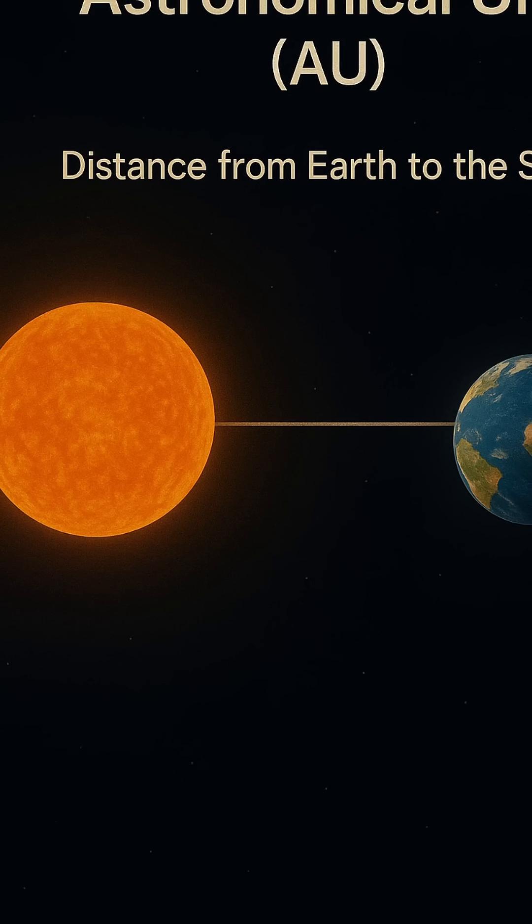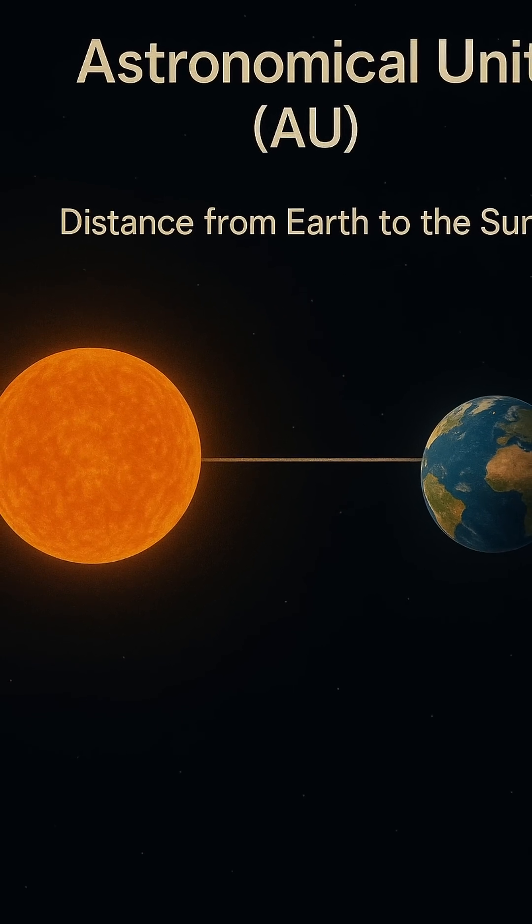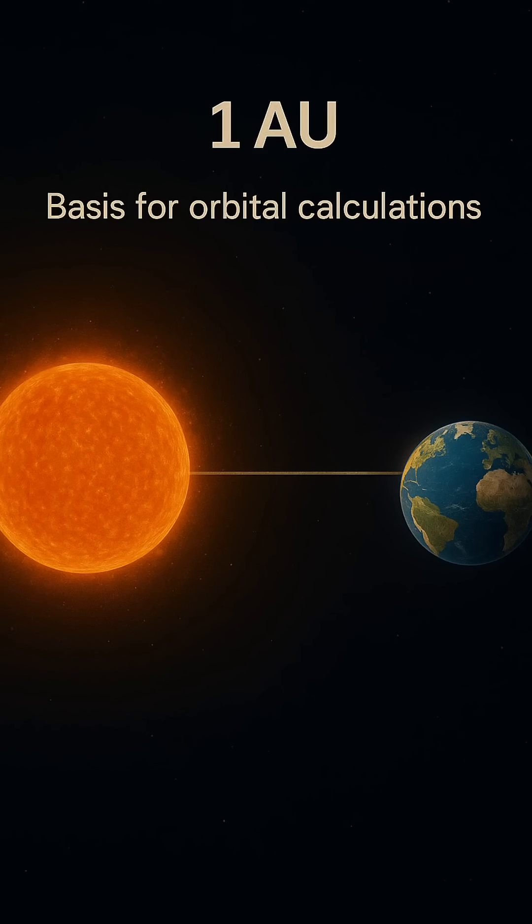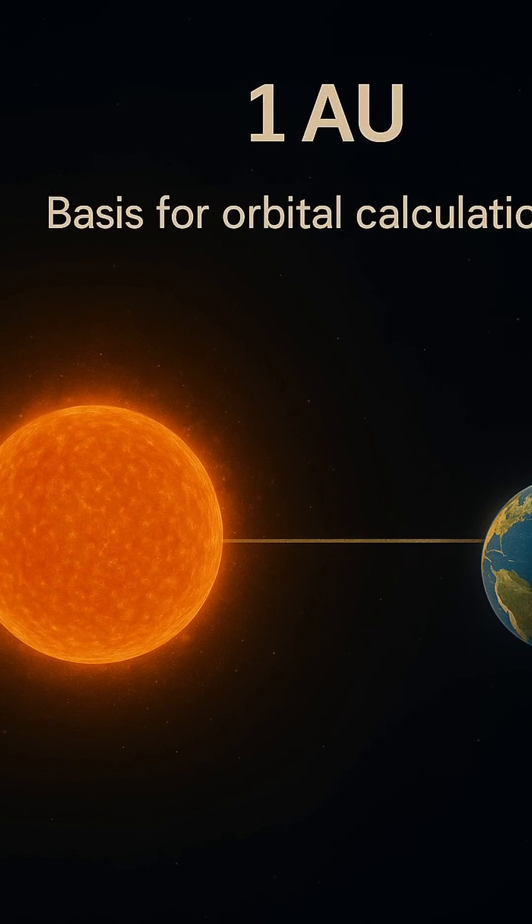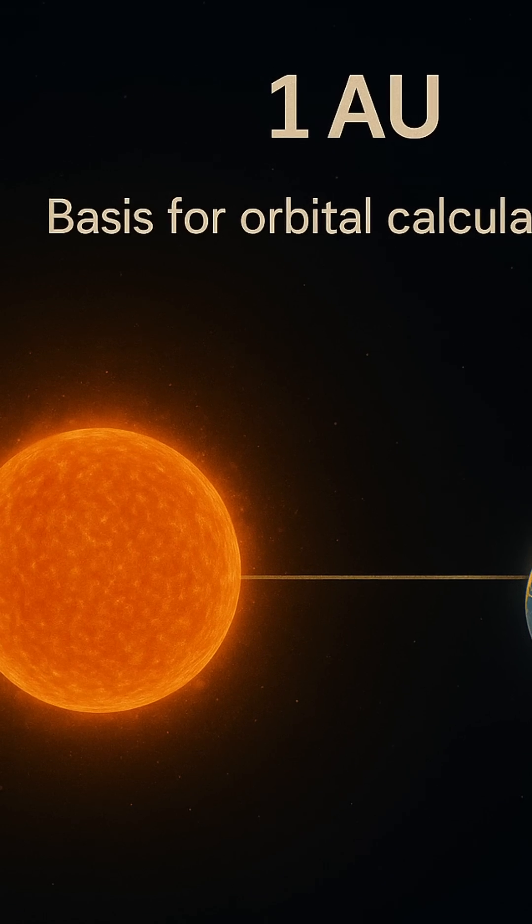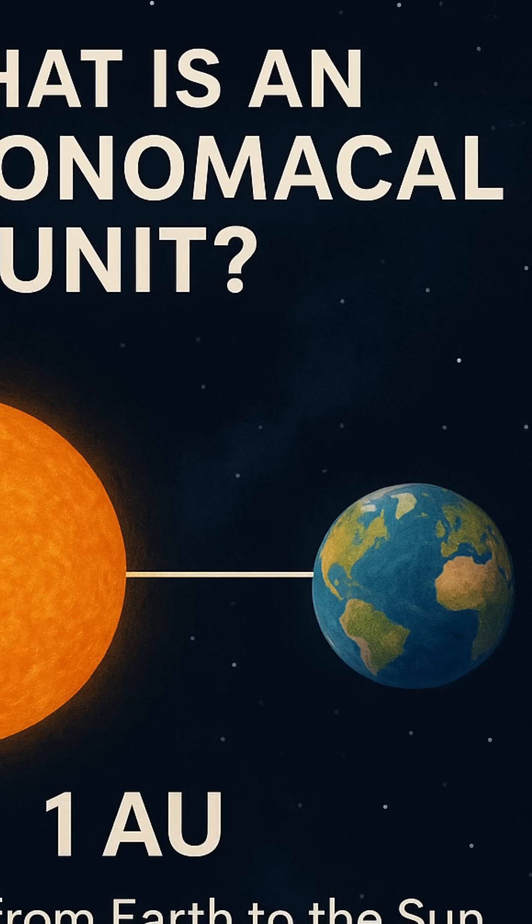Kepler's Laws of Planetary Motion, describing how planets orbit the Sun, use this unit to simplify the math. Even mission planning for space probes like Voyager or New Horizons involves AU-based distances to ensure accurate navigation through space.